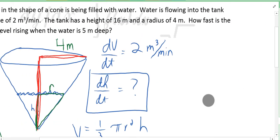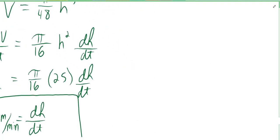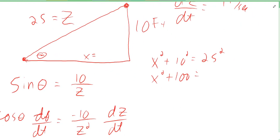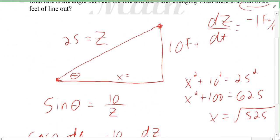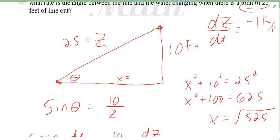X is the square root of 525. We can simplify that, which we will in a second, but we need cosine. If x is that number, and that's only at this point in time—remember the fish is being reeled in so that's changing—but all we care about is this point in time. So cosine is root 525 over 25.